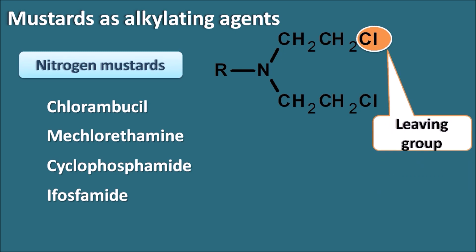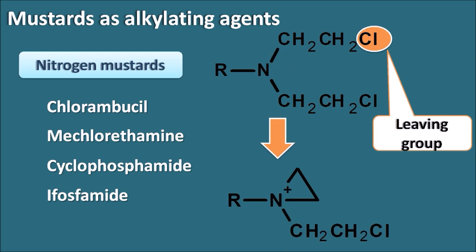Once this chlorine is removed from the molecule, it can be converted to an intermediate aziridinium ion. Aziridinium ions are highly reactive and they can attack the nucleophilic sites of the DNA, forming alkylation on the strands of the DNA. In this way, nitrogen mustards can produce either inter- or intra-strand cross-linkage between the DNA strands.